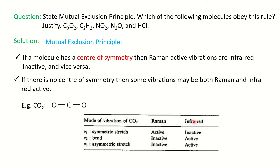IR activity is based on the change in dipole moment. For symmetric stretching of CO2, if you stretch the molecule symmetrically, there is no change in the dipole moment, so it is IR inactive. Since CO2 possesses a center of symmetry and symmetric stretching is IR inactive, it will be Raman active. For the other two vibrations — bending and asymmetric stretching — there is a change in dipole moment, so they are IR active and therefore Raman inactive. In this way, CO2 obeys the mutual exclusion principle.